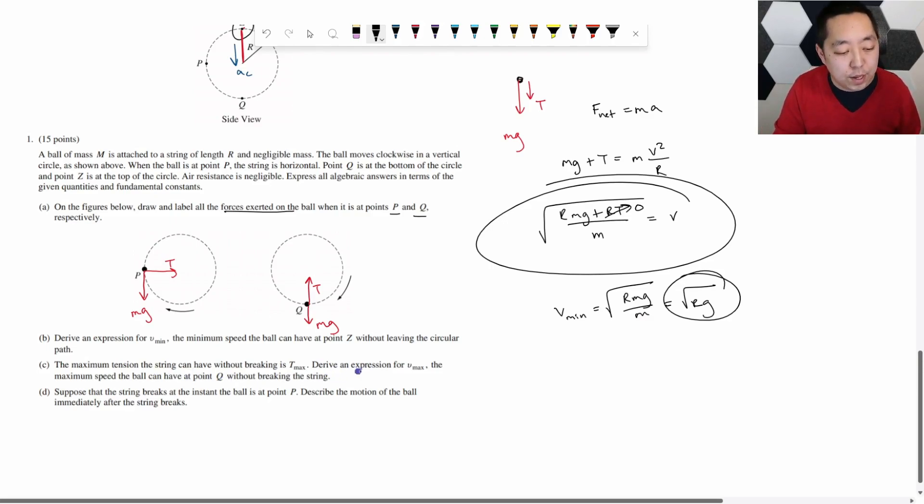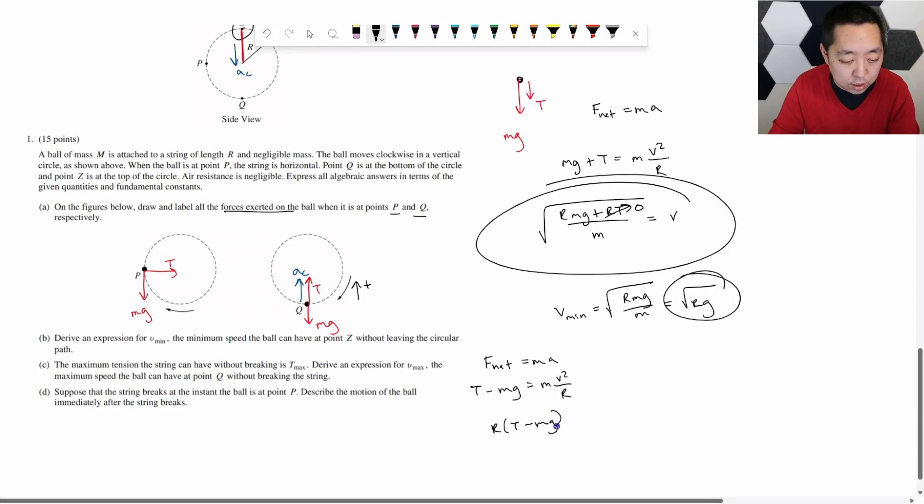The maximum tension the string can have without breaking is t max. Derive an expression for v max, the maximum speed it can have at point q without breaking the string. Okay, so we have a free body diagram. We do f net equals ma. It's moving in a circle, so there's centripetal acceleration directed towards the center of the circle. That's the rule for centripetal acceleration towards the center of the circle. So when I apply f net equals ma, I'm going to get, let's say, up is the positive direction towards the acceleration. So that's going to be t minus mg, because mg is down, the negative direction. That's going to be mv squared over r. And you can solve for v max. So we're going to solve for v. We're going to multiply by r, so multiply by r times t minus mg divided by m equals v squared. So the v is equal to root rt minus mg over m.